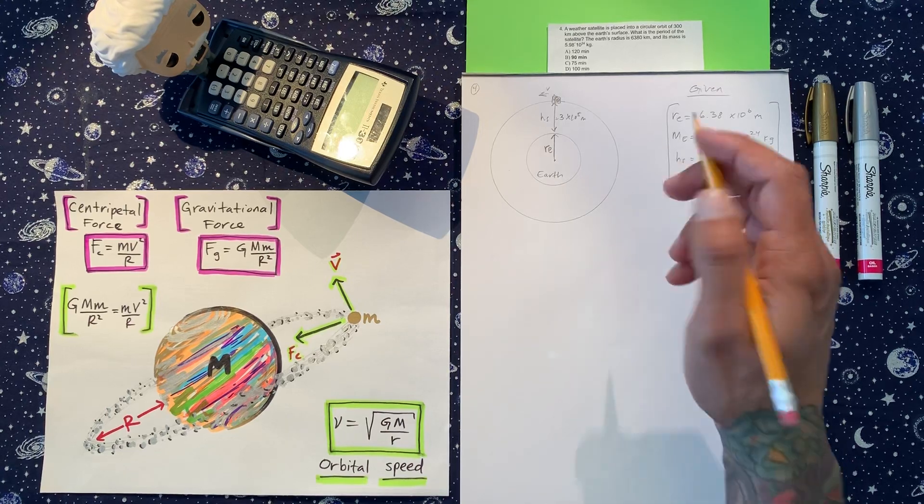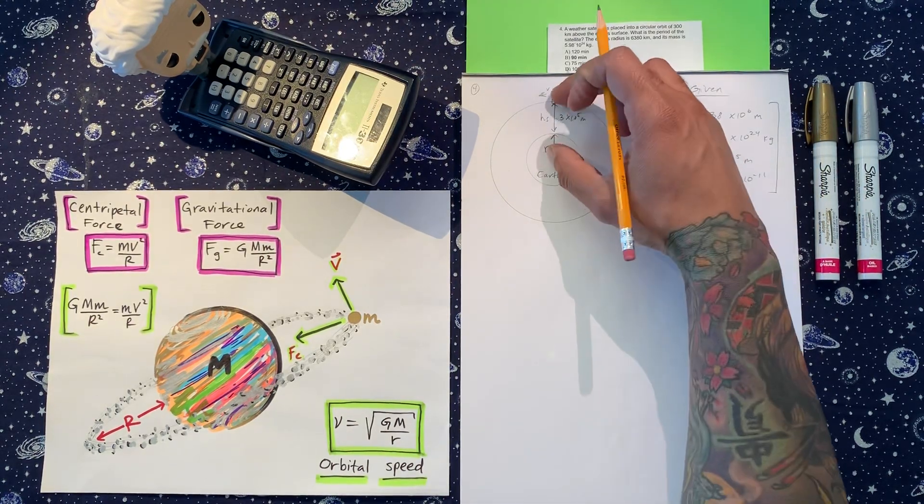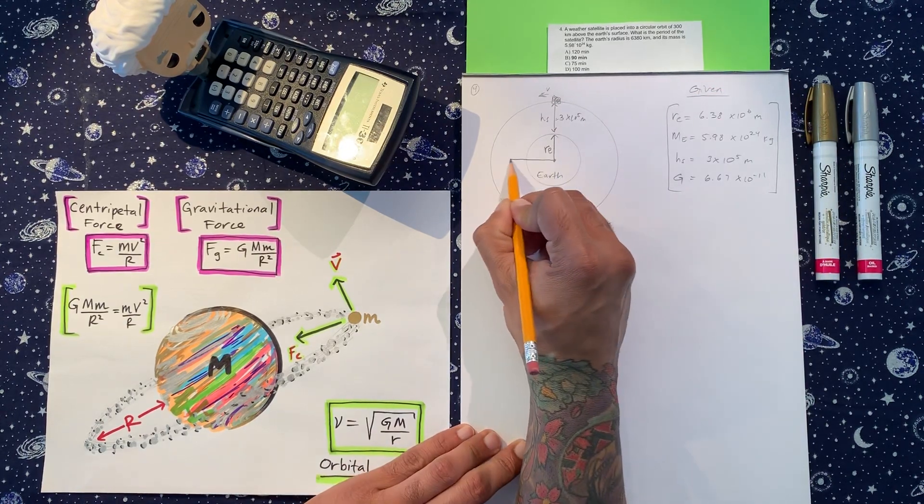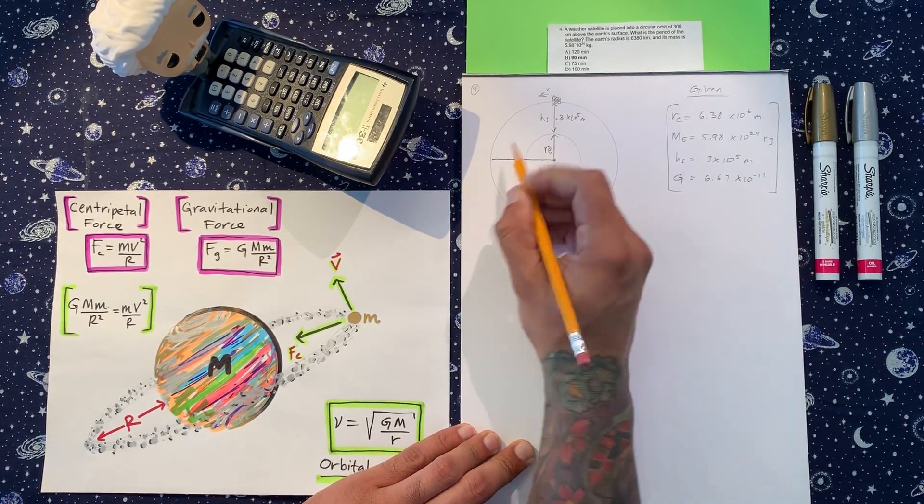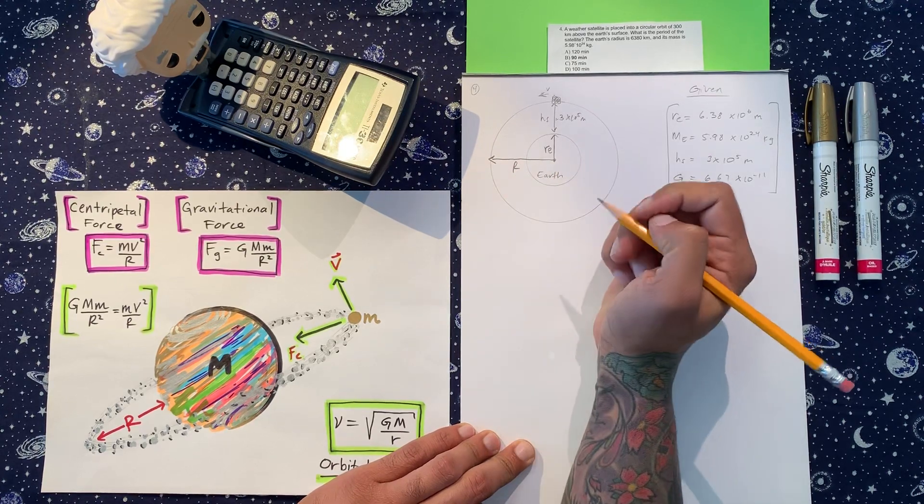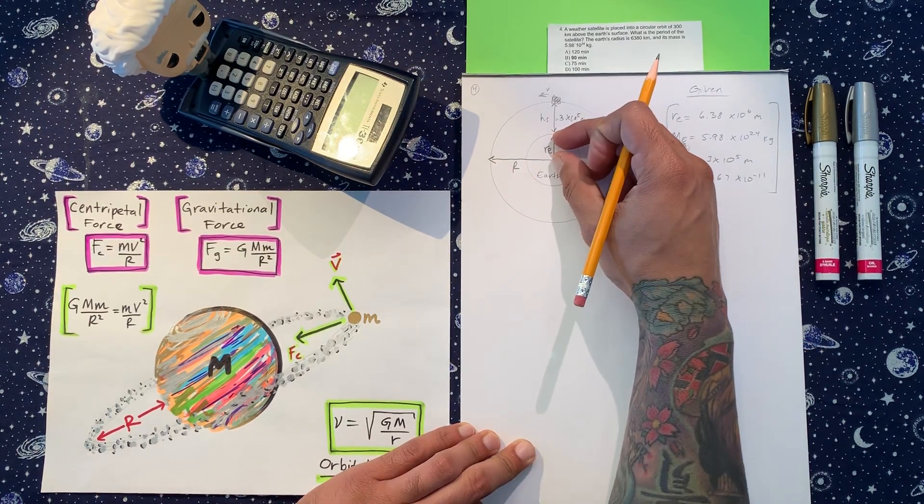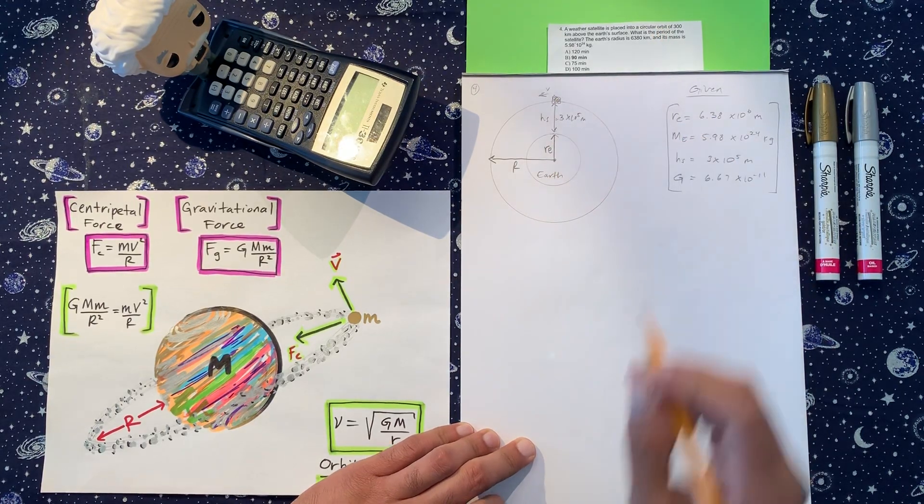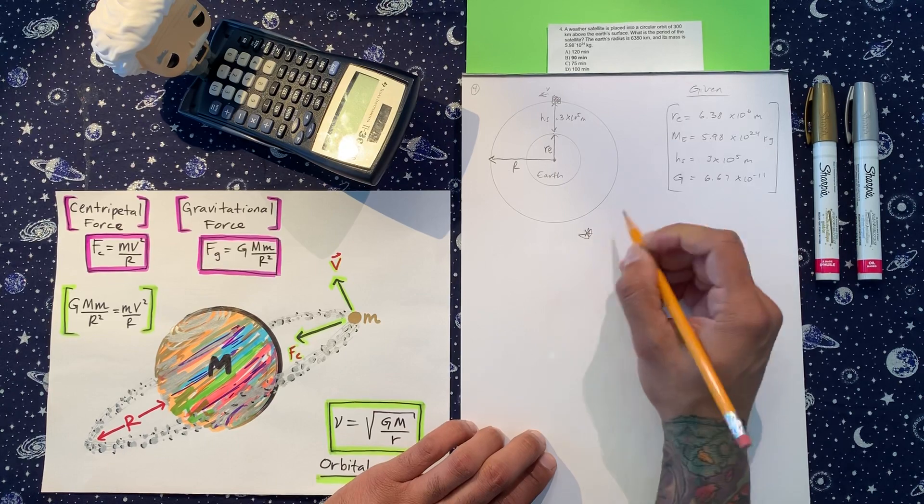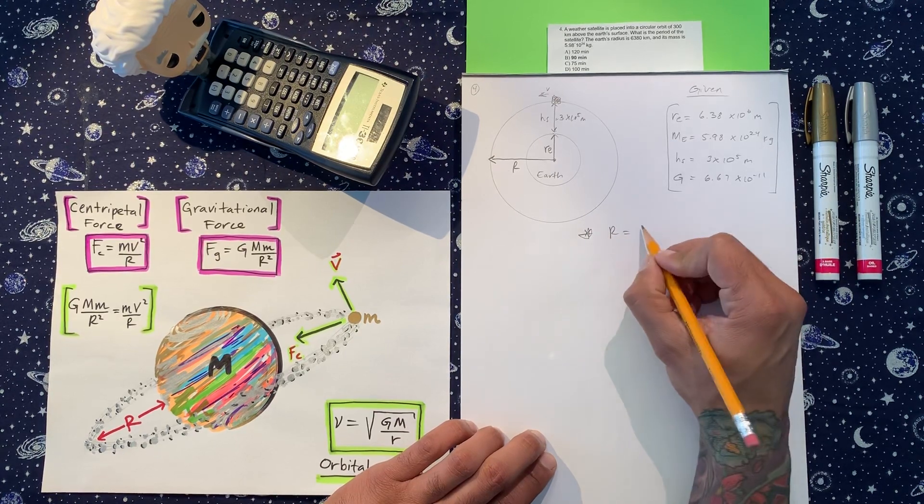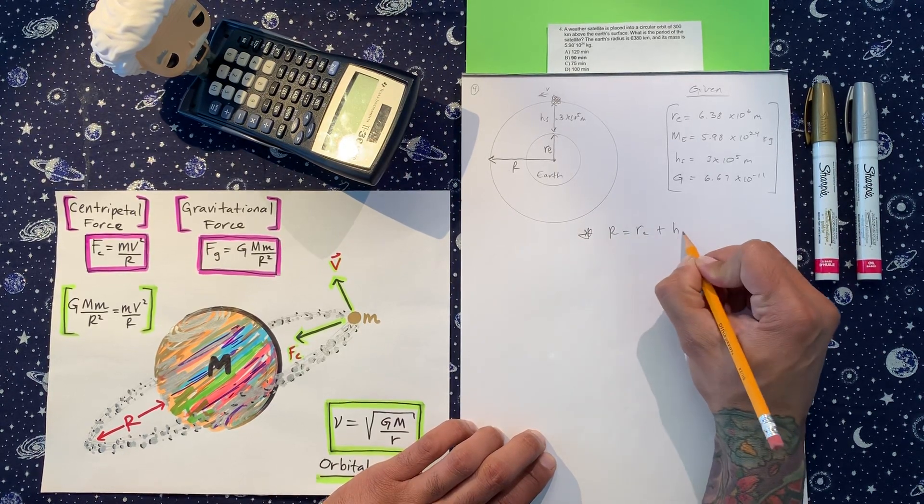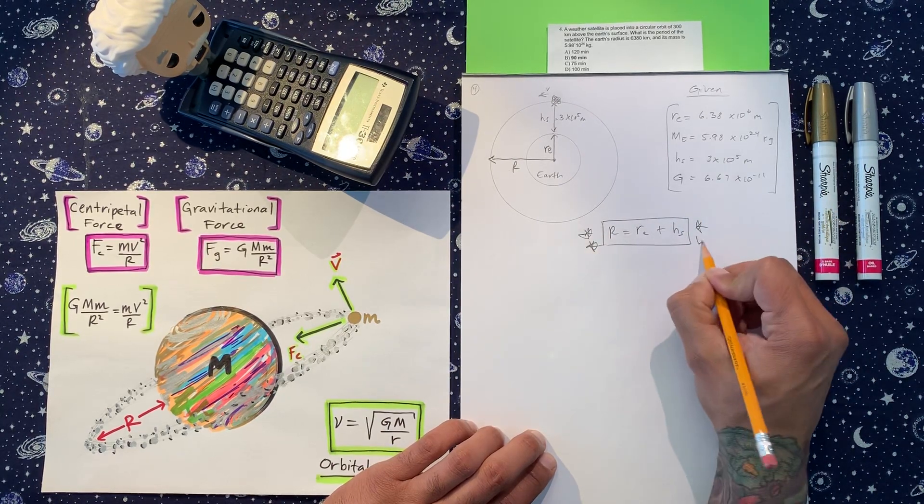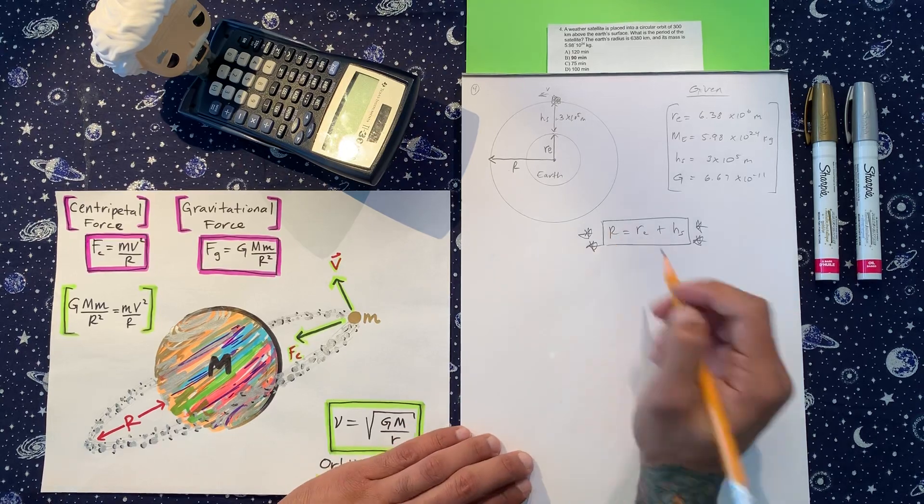But because these two values are separate, which is what gets most people, this value that goes from the center of Earth all the way out to the outside is big R. So big R is made up of the radius of the Earth and the height of the satellite above the Earth's surface. So the first thing to write is R is equal to little r_e plus the height of the satellite. So this is going to be probably the most important thing, sneaky little radius.